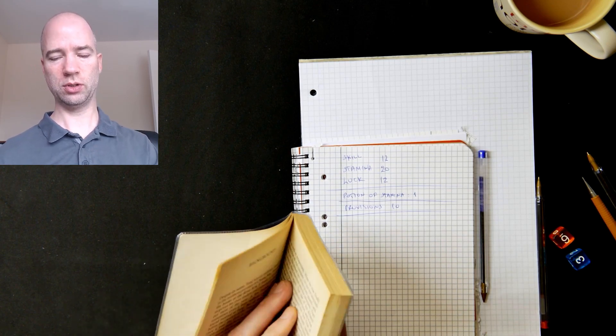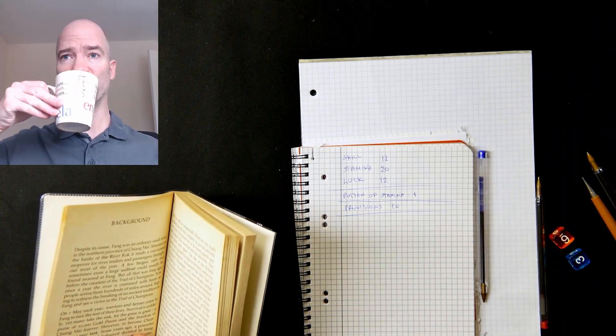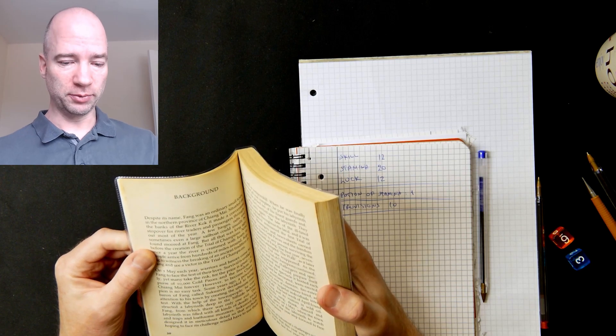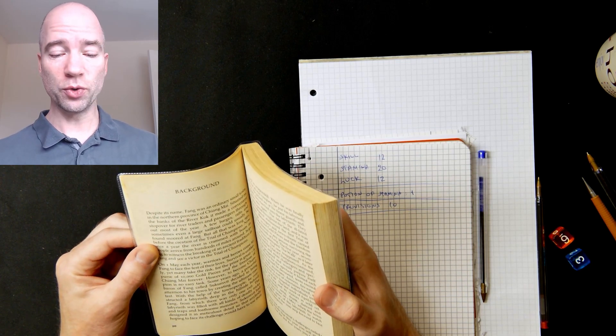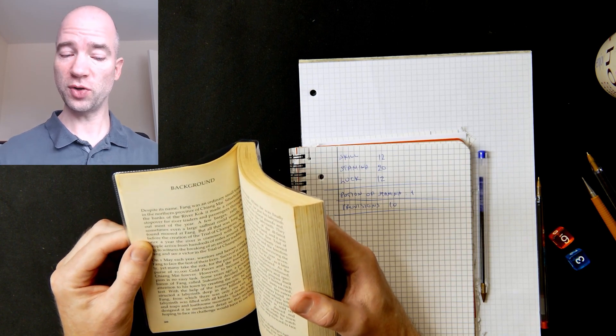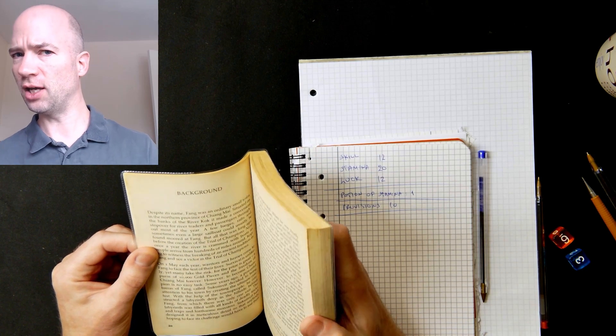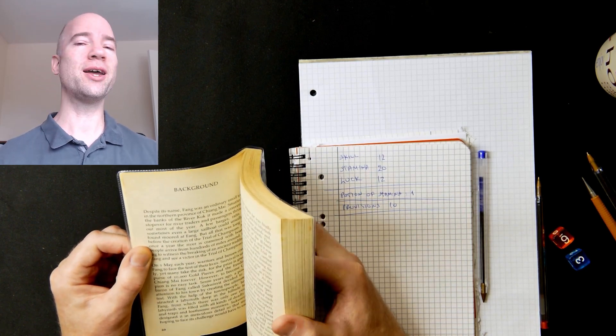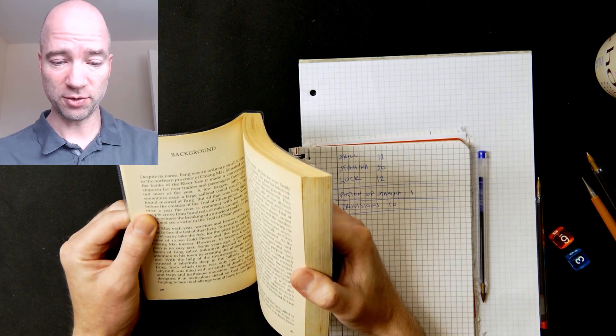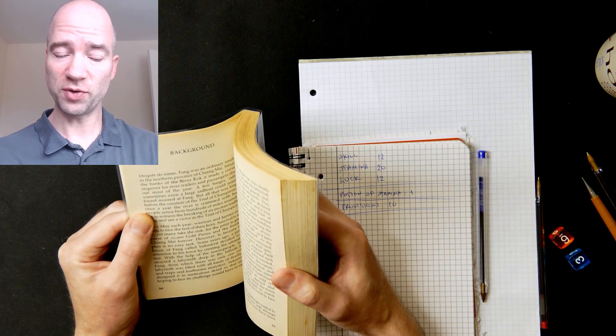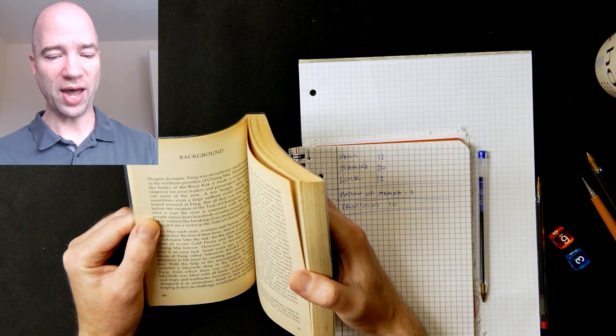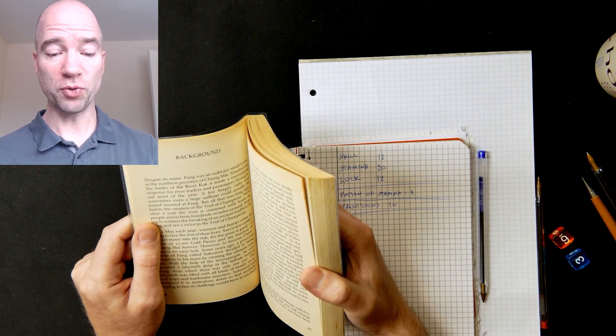Now let's get to the background after another sip of tea. Despite its name, Fang was an ordinary small town in northern province of Chiang Mai, situated on the banks of the River Kok. It made a convenient stopover for river traders and passengers throughout most of the year. And I believe some of the names here are inspired by, or actually directly taken from, Thailand where Ian Livingstone went on holiday at some point around this time actually, so that's where he got the names from. Chiang Mai is in Thailand, maybe Fang is as well, possibly River Kok, I presume as well.